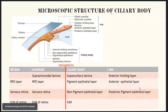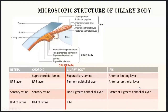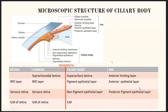The ciliary body has five layers from outer to inner. The outermost is the supraciliary lamina, which is the condensed outer part of the stroma of the ciliary body containing collagen fibers. The suprachoroidal lamina of the choroid is anteriorly continued as the supraciliary lamina at the ora serrata. The supraciliary lamina is anteriorly continuous as the anterior epithelium limiting layer of the iris. Inner to the supraciliary lamina is the stroma of the ciliary body, which is lined by two layers of epithelium.